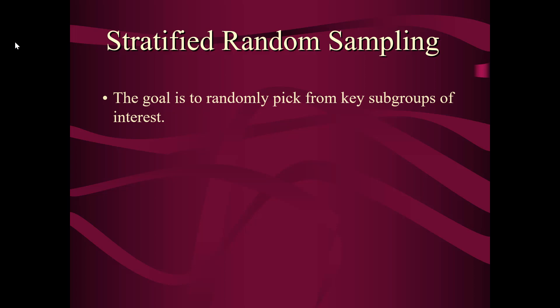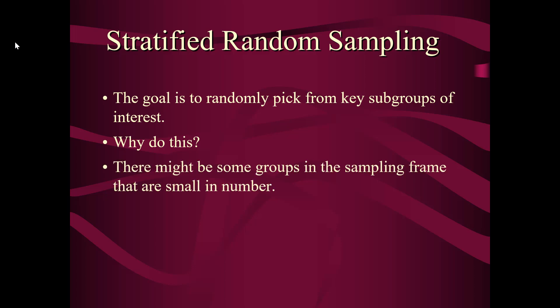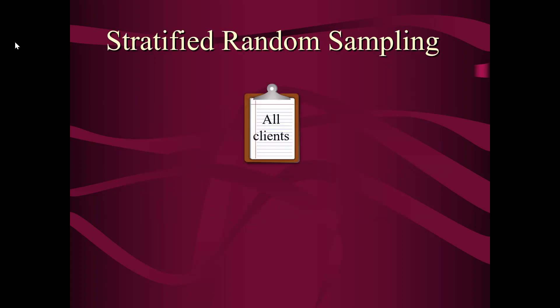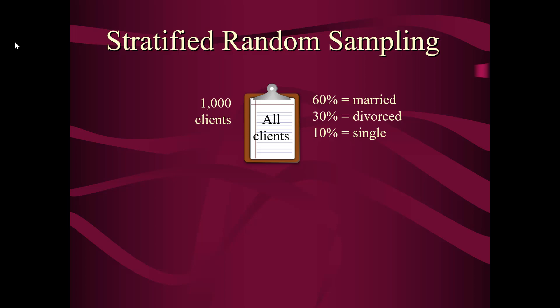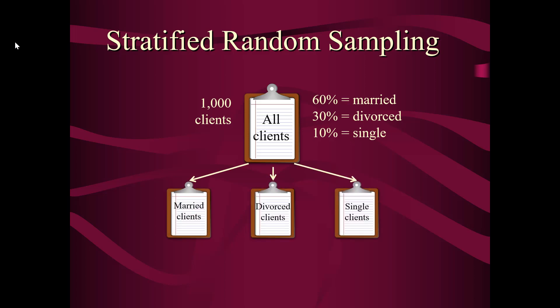The second type of random sampling is stratified random sampling. The goal is to randomly pick from key subgroups of interest. Why do this when simple random sampling is so simple? Well, there might be some groups in the sampling frame that are small in number, and simple random selection might miss including them. For example, let's say I have a list of 1,000 clients: 60% are married, 30% are divorced, and 10% are single. If I just pick from this full list, I might miss the folks who are single, only getting a couple depending on my sample size.